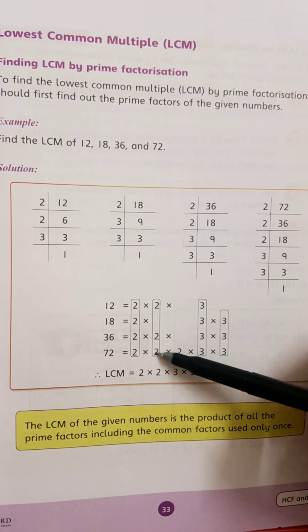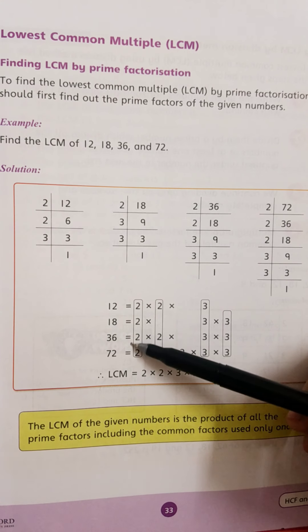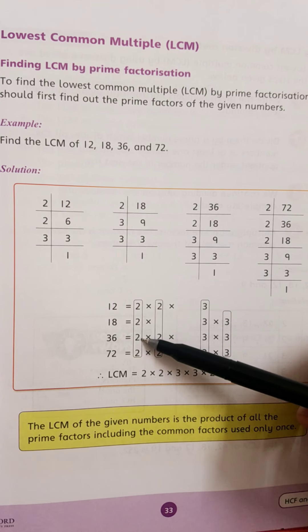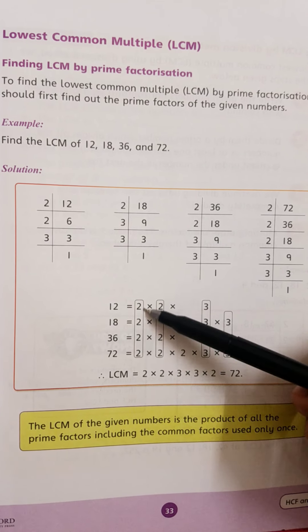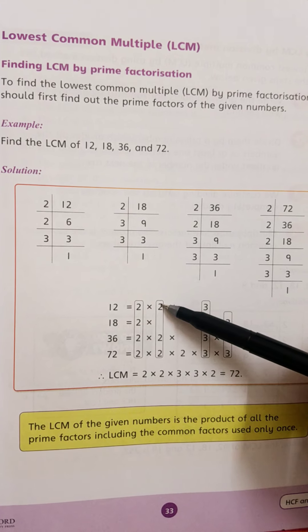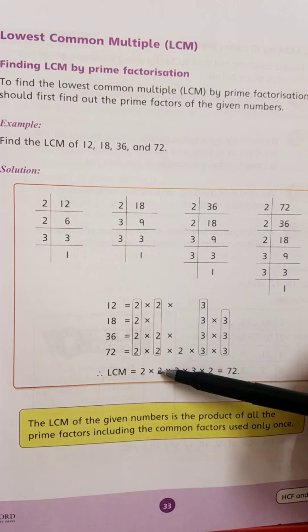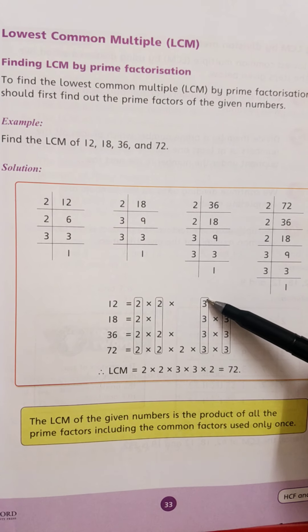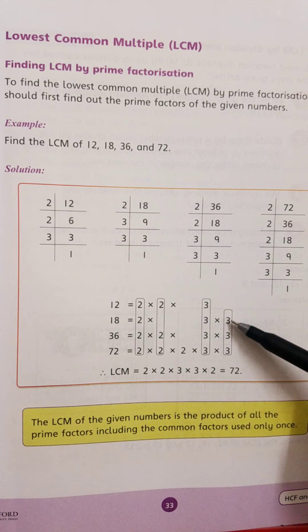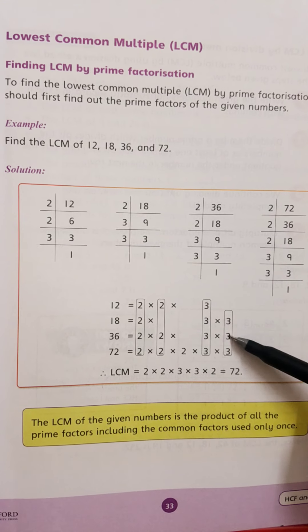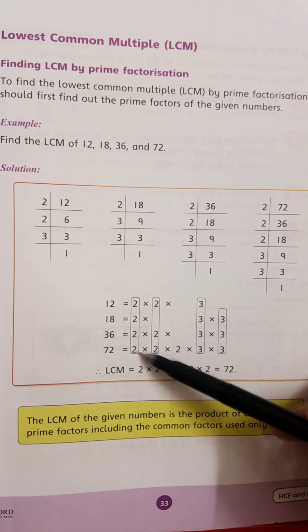Find the common factors which are in all four numbers, or in three numbers, or in any two numbers. First, 2 is common in all four numbers, so write it one time. In three numbers there is 2 again, write it one time. Then 3 is in all four numbers, write it one time. This 3 is in three numbers, so write it one time.